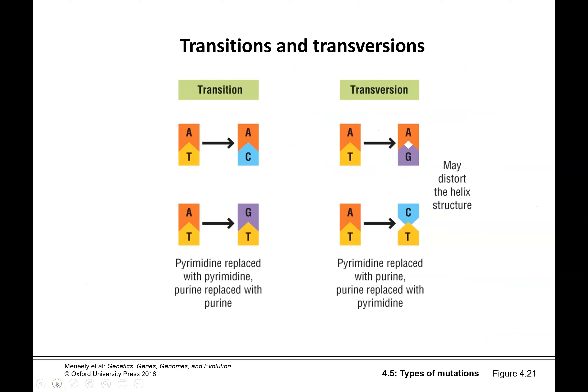There are different types of mutations that can take place. One is a transition, where a pyrimidine is replaced with a pyrimidine — so a thymine is replaced with a cytosine or vice versa — or a purine is replaced by a purine, so adenine and guanine get swapped. We can also have a transversion, where you get a purine and a pyrimidine swap. This is a problem because it's going to distort the double helix.